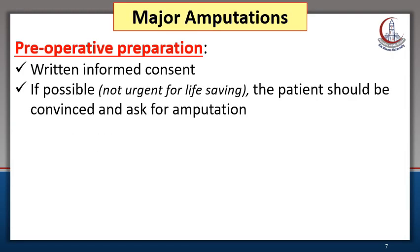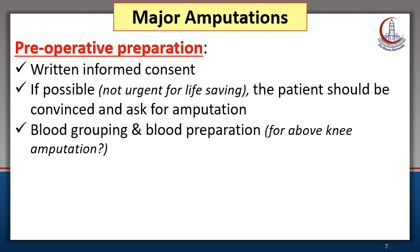For all patients undergoing major amputation, proper preoperative preparation is very important. A written informed consent should be obtained. If possible, and if the amputation is not urgent or life-saving, the patient should be convinced and should himself ask for the amputation. For all patients undergoing above-knee amputation, blood for possible intraoperative transfusion should be prepared.